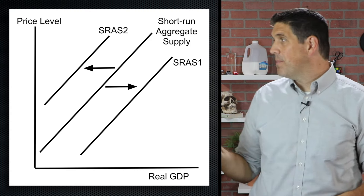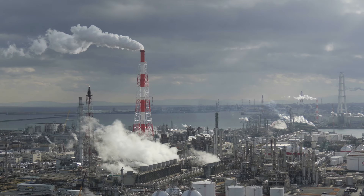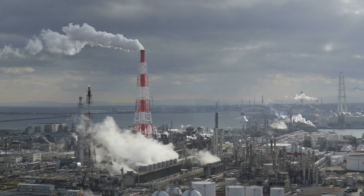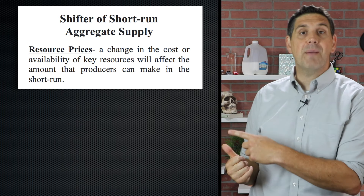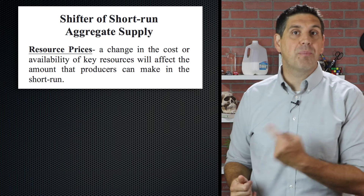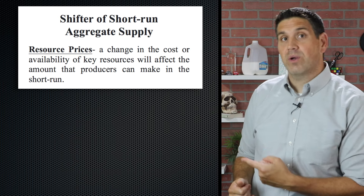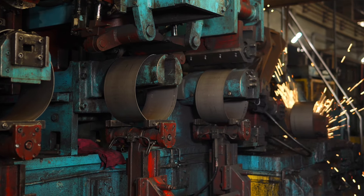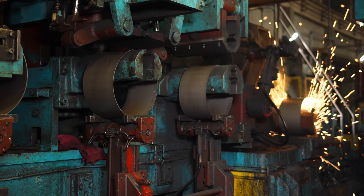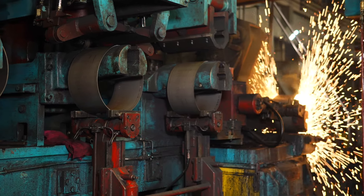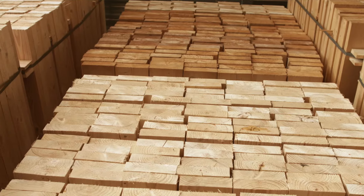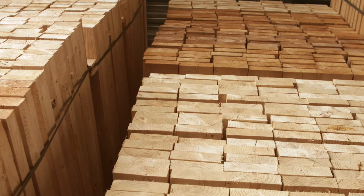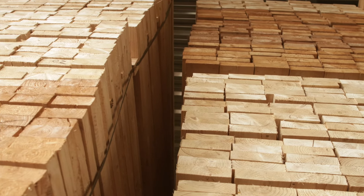The shifters are really simple. Anything that affects the production of a lot of goods and services would shift the curve. For example, a change in the price of resources. If the price of resources increases and we can't produce as much as we could before, aggregate supply would shift to the left. And if we have more or cheaper resources, then aggregate supply would shift to the right.